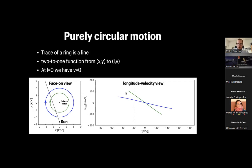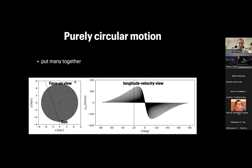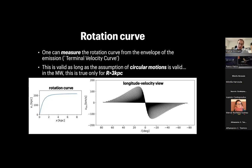Note that at l=0, when you look exactly through the galactic center, velocity equals zero — because the velocity is perpendicular to the line of sight for purely circular motion. When you put together many of these rings, you fill the diagram with a characteristic shape. This was historically the first method used to measure the rotation curve of the Milky Way, from the envelope of the emission, which depends on the velocity curve.